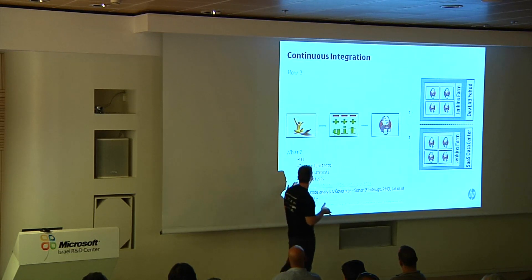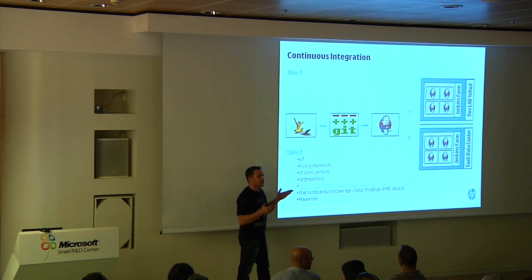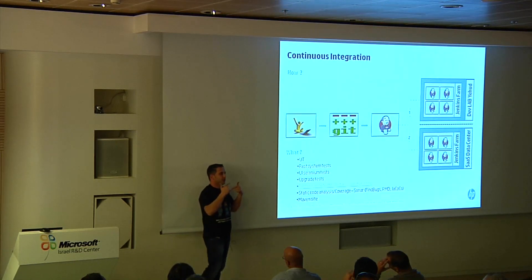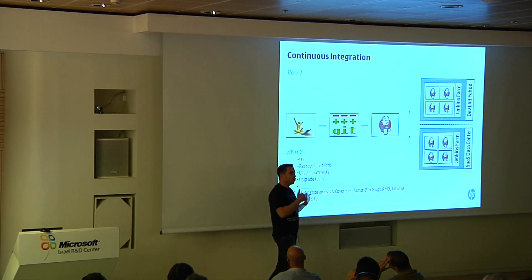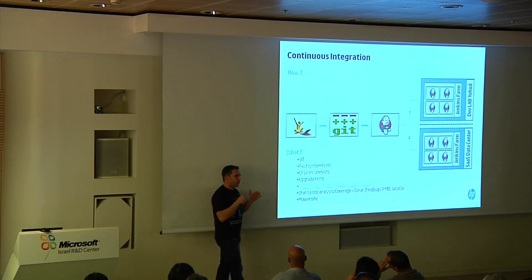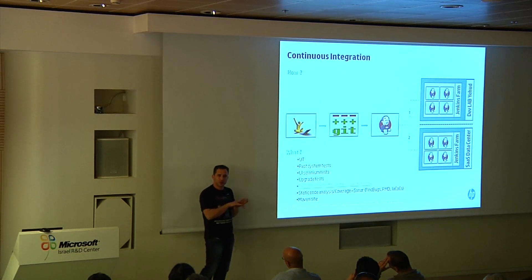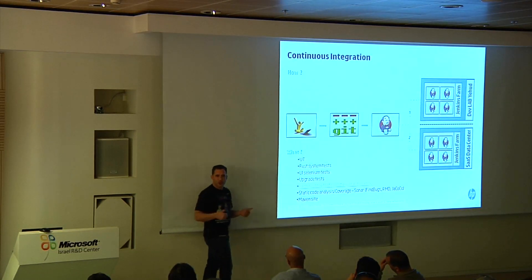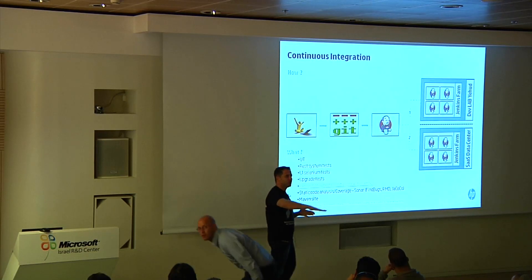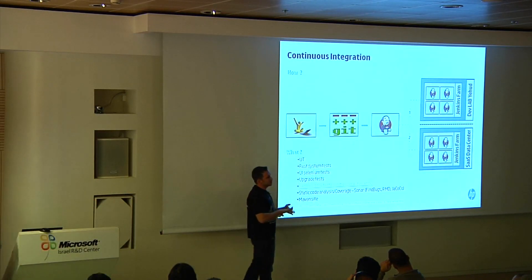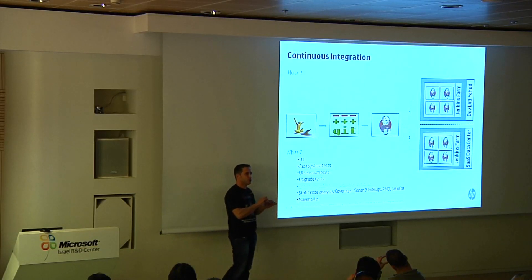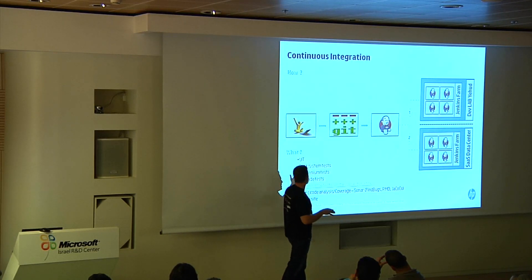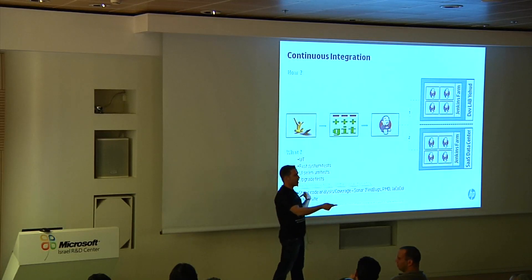How can this be achieved? We moved some data from our production project to our labs, and each CI test run is running on a project upgraded from actual customer data. The big difference between on-premise and SaaS is that in on-premise you have a clean installation — you come to the customer, install the new product, and everything is clean. In SaaS it's the opposite: each check-in must be verified with the upgrade solution. Every test — REST system tests and Selenium tests — should be run over an upgraded system.